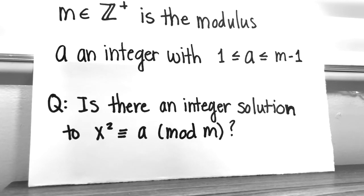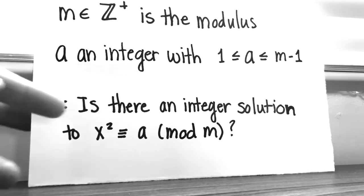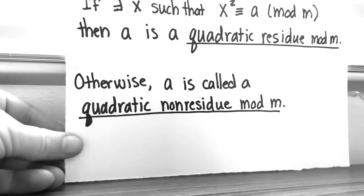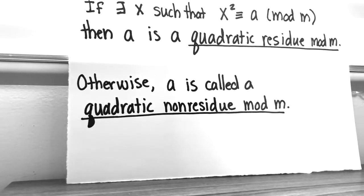So that aside, the main question in quadratic reciprocity is x squared congruent to a mod m. Does that have a solution? Is there a value x between 1 and m minus 1 such that this congruence is true? And if so, then we call a quadratic residue mod m. So if there's a solution, it's a quadratic residue. And if there's not a solution, then we call a quadratic non-residue.